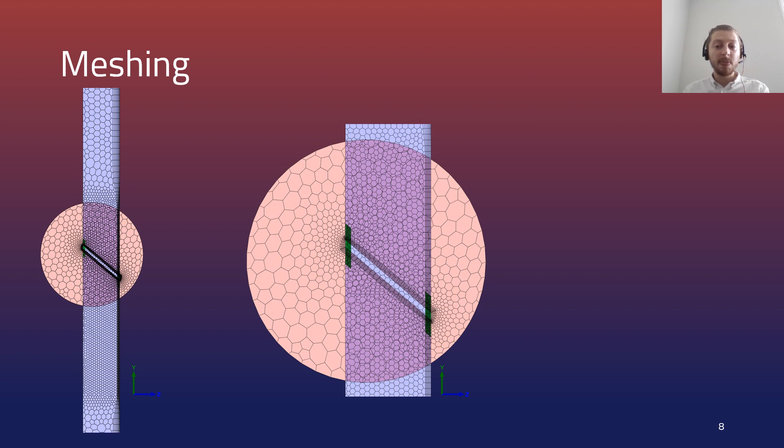Overset meshing was used to incorporate the valve leaflets into the fluid cylinder. This facilitated the dynamic motion required for the valves and allowed for a consistent and refined mesh on the surface of the leaflets.